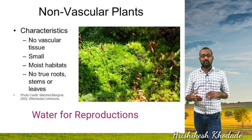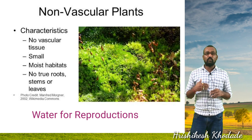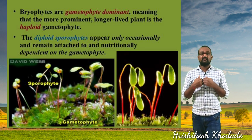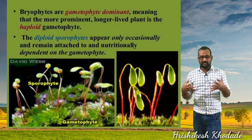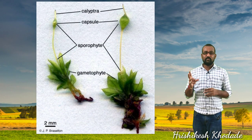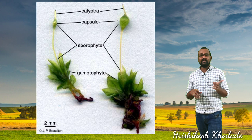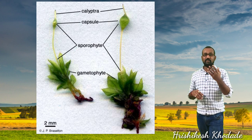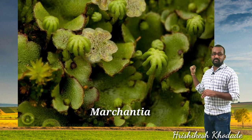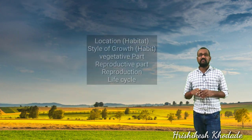Bryophytes require water for their reproduction — please note this important point. They are gametophytic plant bodies, meaning they directly release gametes outside the body. These gametes unite and result in the formation of a sporophyte. The picture shows a bryophytic plant where you will not find true leaf or root structures, but analogous parts functioning like leaves and roots are present. An example is Marchantia.